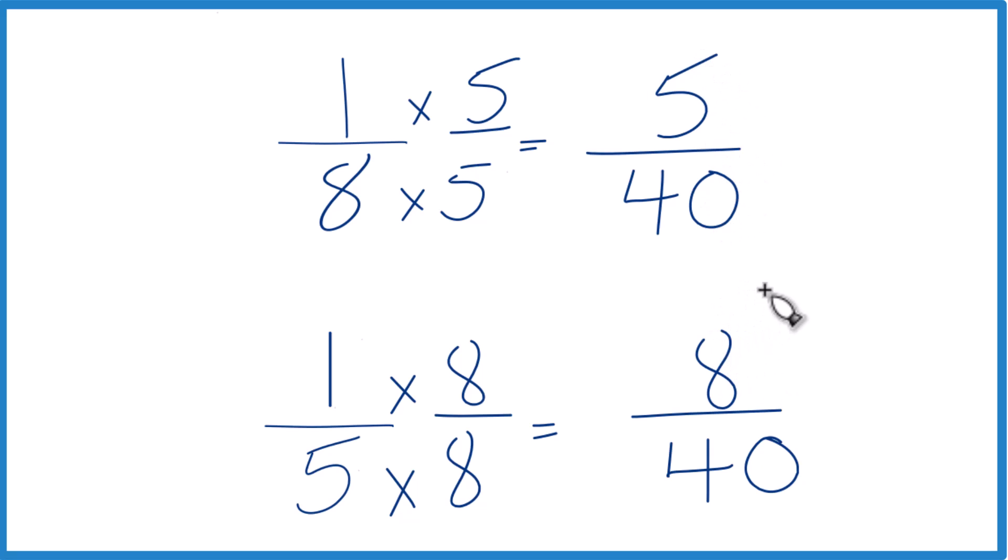8 is greater than 5, so 8/40 is greater than 5/40. And these are equivalent here, like this. So we can just say that 8/40 is larger than 5/40. 1/5 is larger than 1/8.